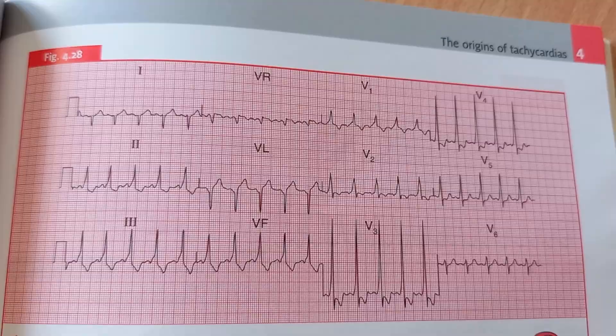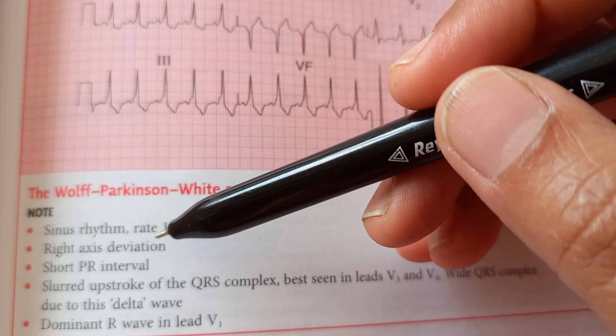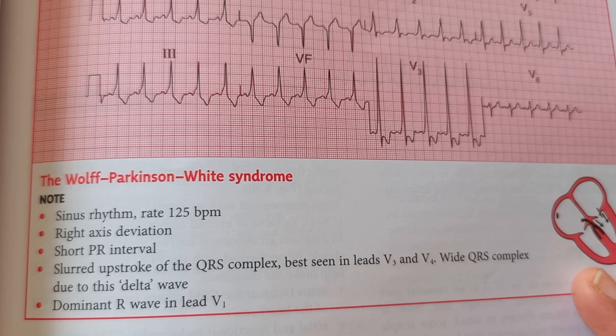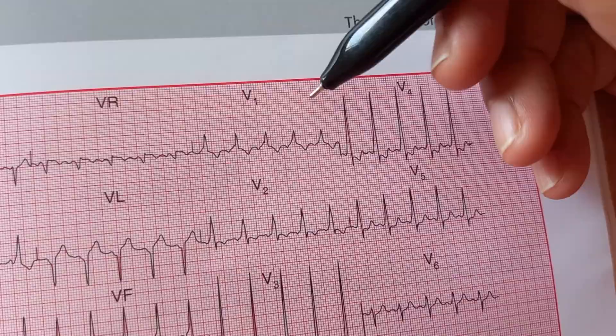Here they have shown the name of a condition which has a specific name: This is Wolf-Parkinson-White syndrome. Sinus rhythm is there, left-right axis deviation, short PR interval, slurred upstroke of the QRS complex, delta wave, dominant R wave in lead V1. Where is V1 here? What are they saying? There's a dominant R wave.